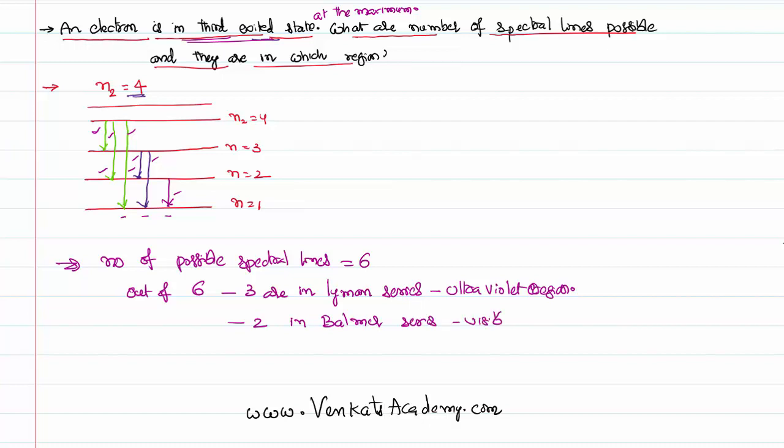There is one spectral line falling into n equal to three - Lyman, Balmer, and Paschen series. In that Paschen series, it is above the visible region. That could be probably in the infrared region.